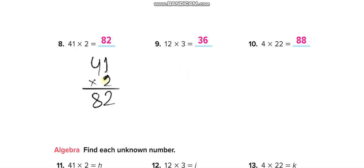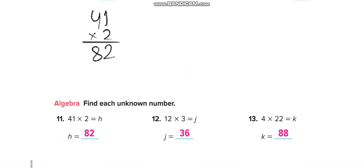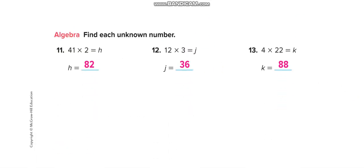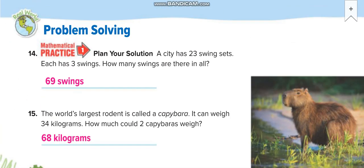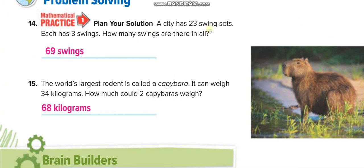Like this, all these questions. Okay, next page now. The city has 23 swing sets, each has three swings, so 23 times 3. You can multiply it the way I showed you here in this way, right?